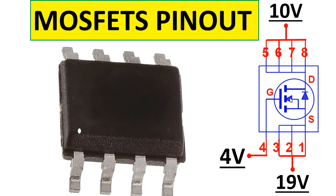You can tell the type because the arrow goes from source to gate — when the arrow goes from source to gate, it means NPN. But when the arrow goes from gate to source, in that direction, the MOSFET is PNP. When this MOSFET receives a control signal at pin number four, the gate, current will pass from source to drain.